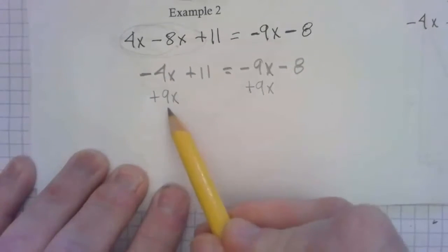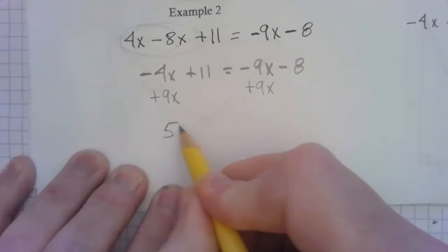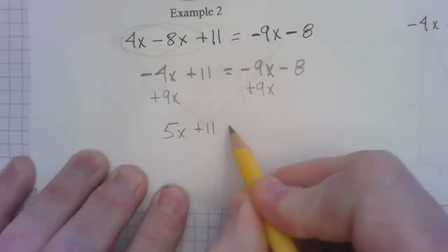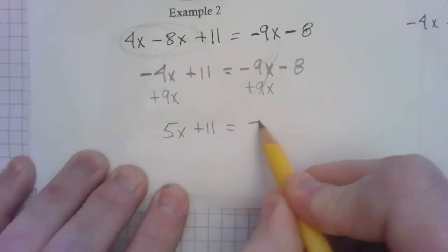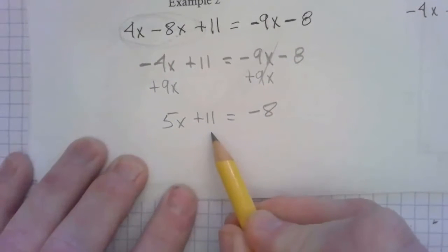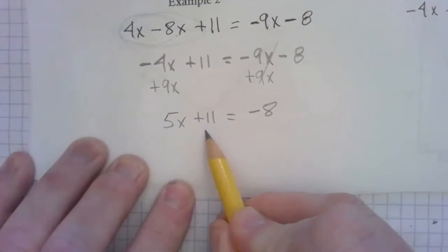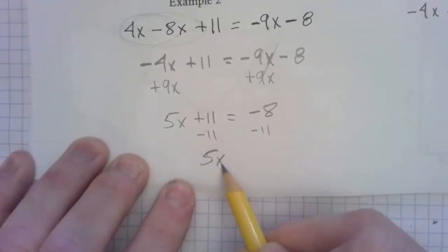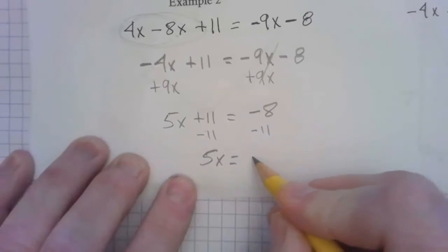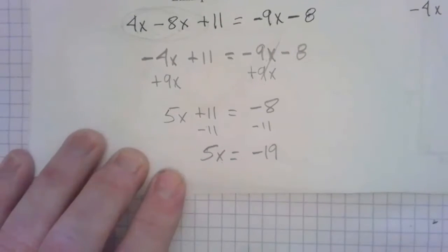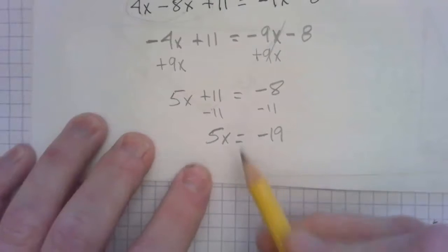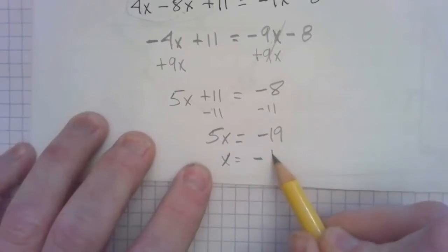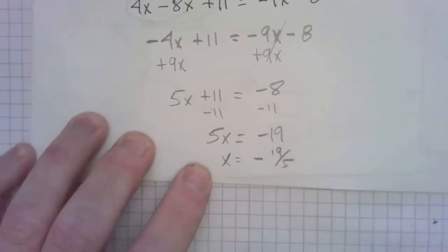Negative 4x plus 9x. So we have 5x plus 11 equals, these are gone, negative 8. I'm going to subtract 11 from both sides. That gives me 5x equals negative 19. We divide by 5, x equals negative 19 fifths, and we're done.